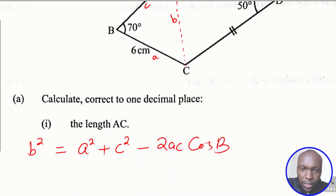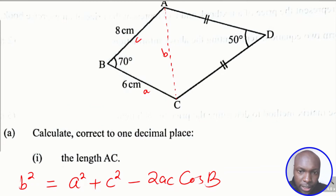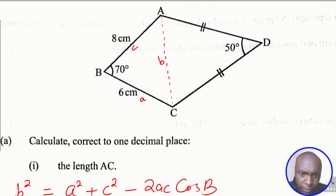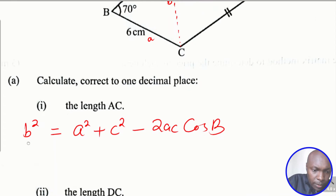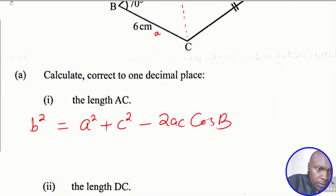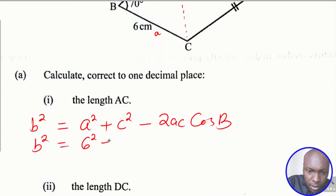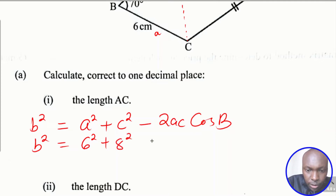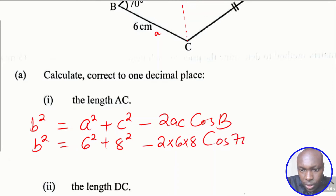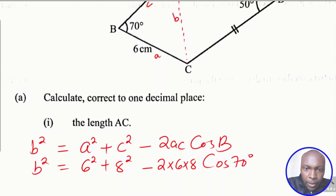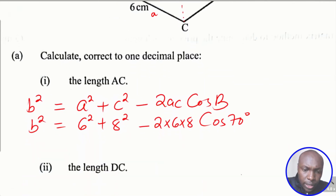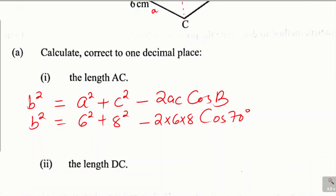We substitute the values into the cosine rule. We have c equals 8 centimeters and a equals 6 centimeters, so b squared equals 6 squared plus 8 squared minus 2 times 6 times 8 times cosine of 70 degrees.